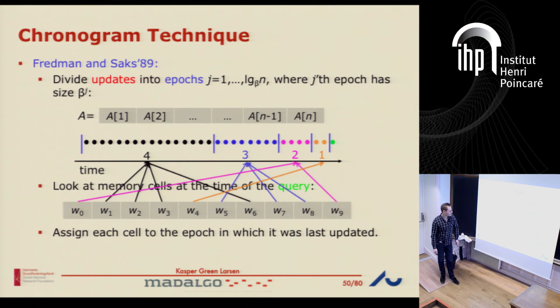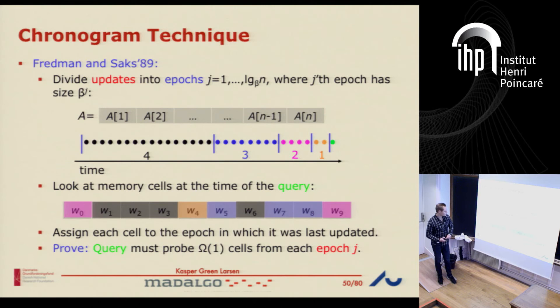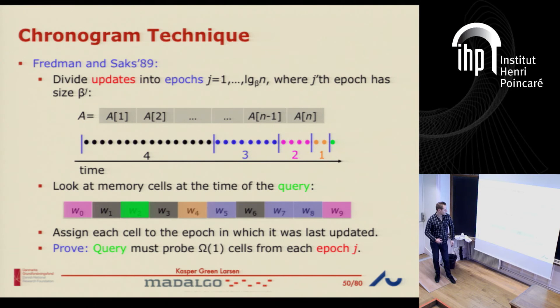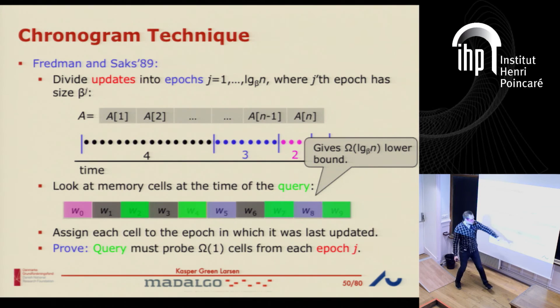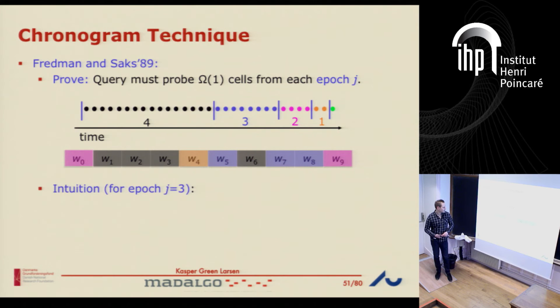This gives some coloring of your memory cells — some black, some purple, some blue, some orange. What you want to show to prove a lower bound is that any data structure has to read at least one cell of each color. It has to read one black cell, one blue cell, one purple cell, one orange cell. Since there are log-base-beta-of-n different colors, you get a log-base-beta-of-n lower bound. This is how the proof goes: we want to prove that you have to read a cell from each color.